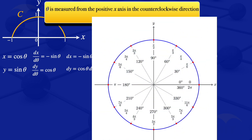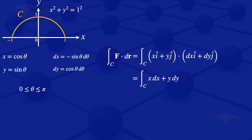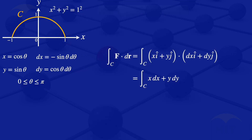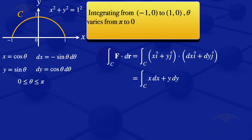Starting from zero and going counterclockwise, we reach pi. Looking at the point minus 1, 0, we see that theta equals pi there, and at the point 1, 0 where we are ending, theta equals zero. So theta ranges between zero and pi, but since we are starting at theta equals pi and ending at theta equals zero, our limits of integration are from pi to zero.